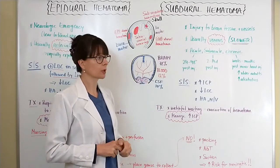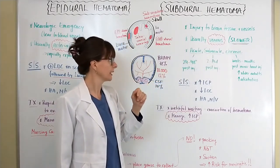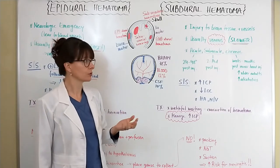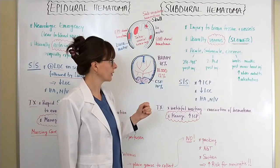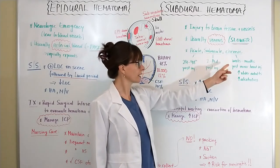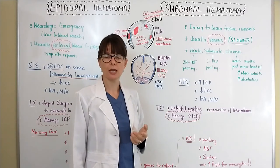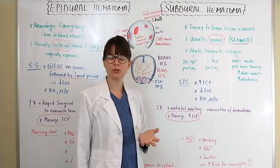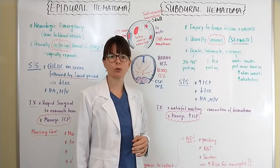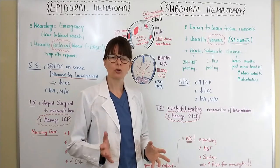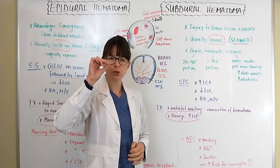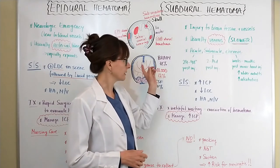For subdural hematoma we distinguish between acute, subacute, and chronic. Acute is within 24 to 48 hours after injury; subacute is 2 to 14 days; and chronic can be weeks or months after what may seem like a minor head injury. For example, an older person bumps their head getting into a car, is fine initially, but weeks later develops decreased level of consciousness because a small blood vessel ruptured and slowly leaked into the subdural space.